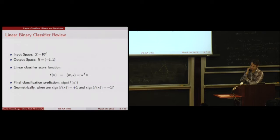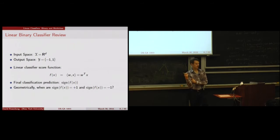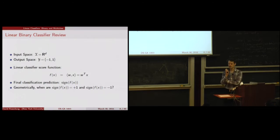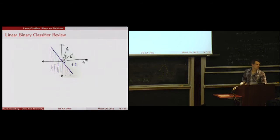Geometrically speaking, what do we know about the relationship between X and W when predicting plus one versus minus one? Their cosine similarity is positive. The inner product of W and X equals the magnitude of W times the magnitude of X times cosine of theta. So this is positive when cosine of theta is positive.